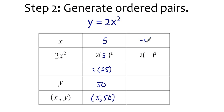Let's try a negative value for x. If you write negative 4 for x, you get negative 4 squared, which is positive 16, and when we multiply that by 2, we get 32, which tells us the ordered pair negative 4, 32, is also in the graph.